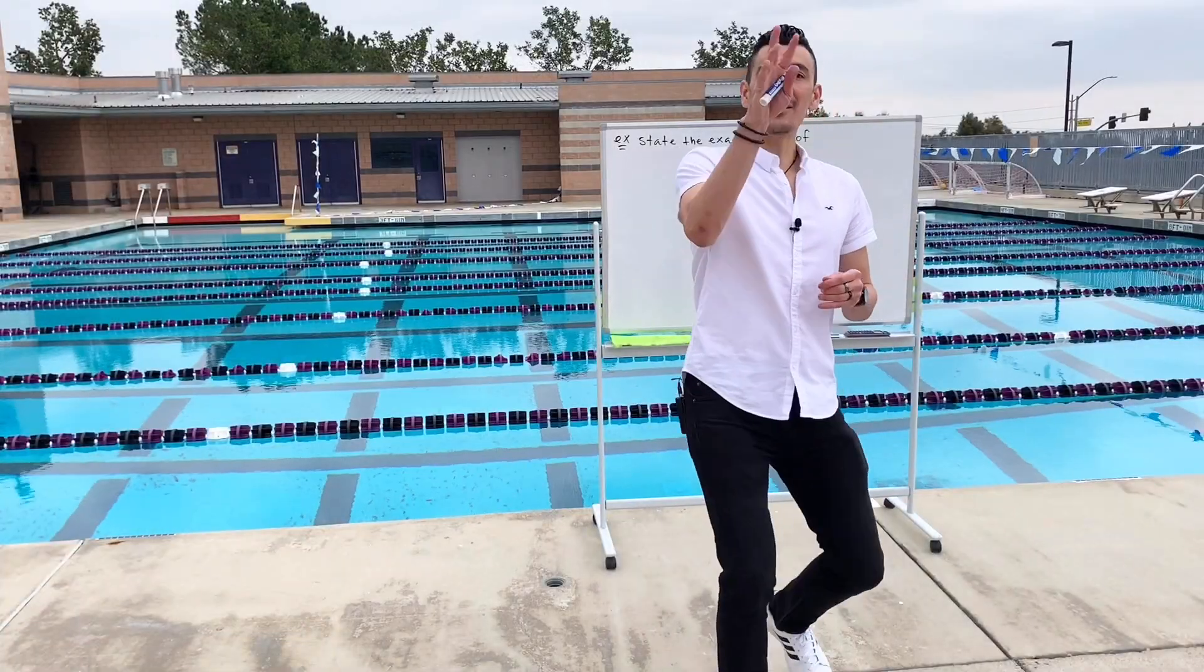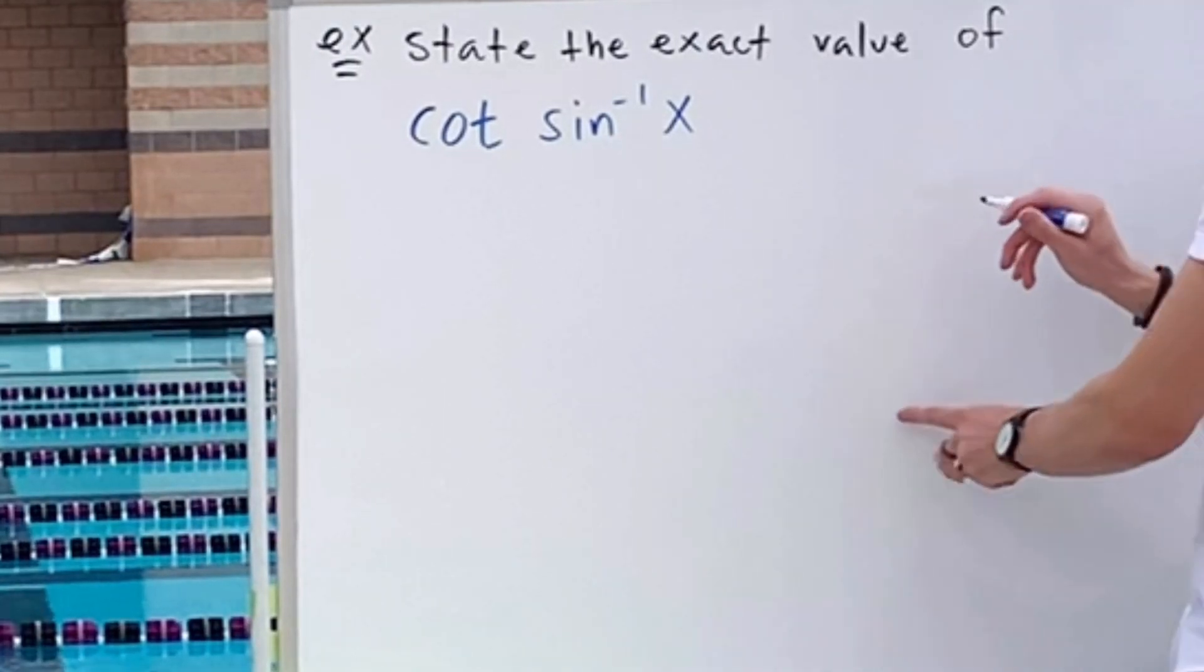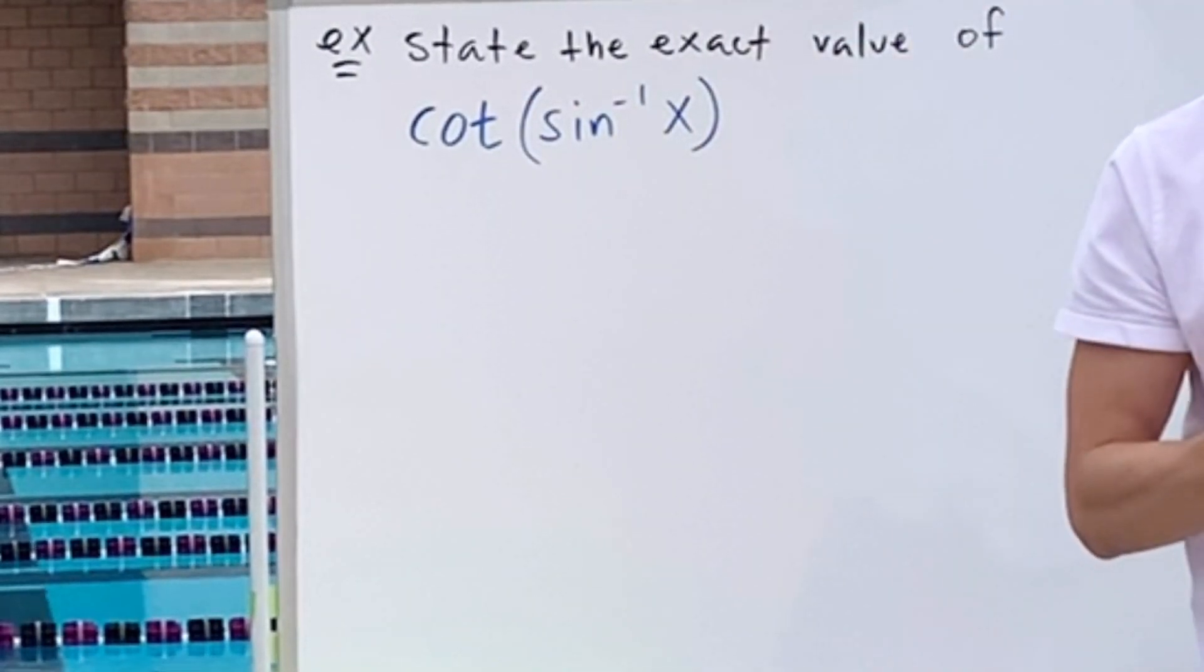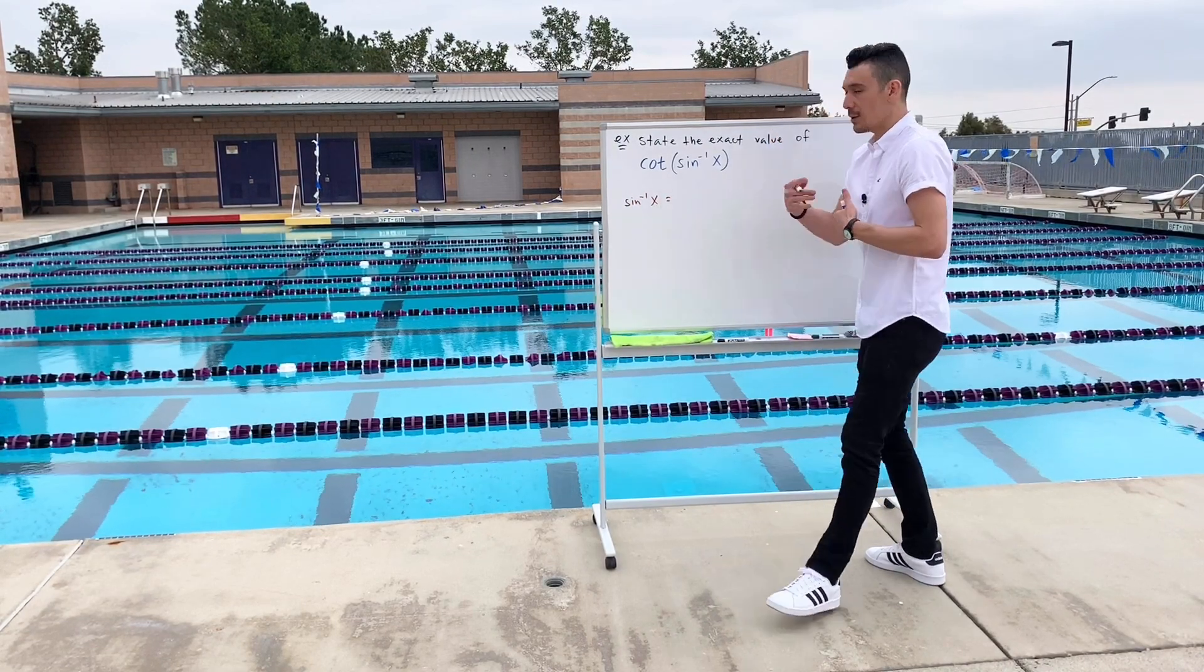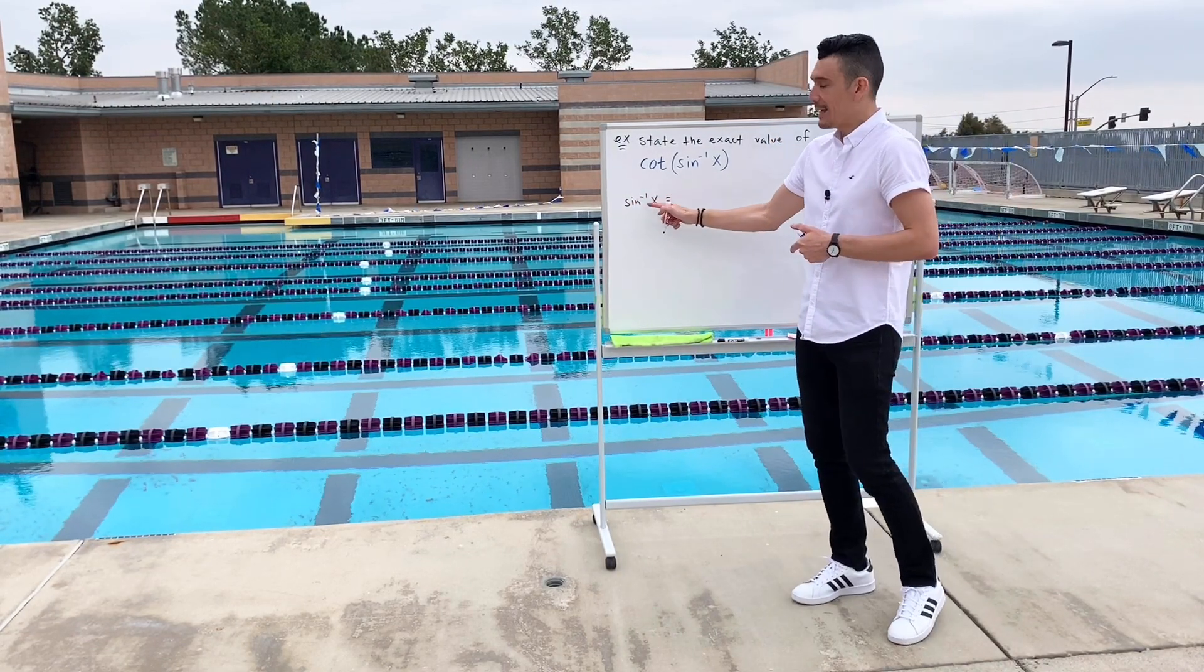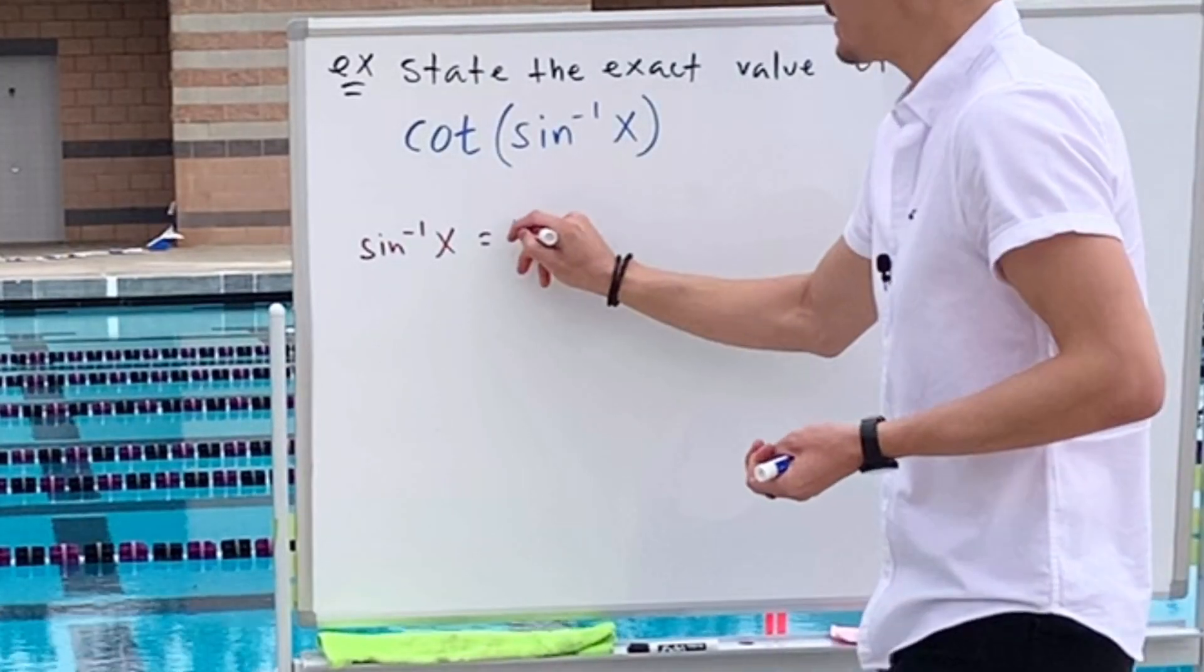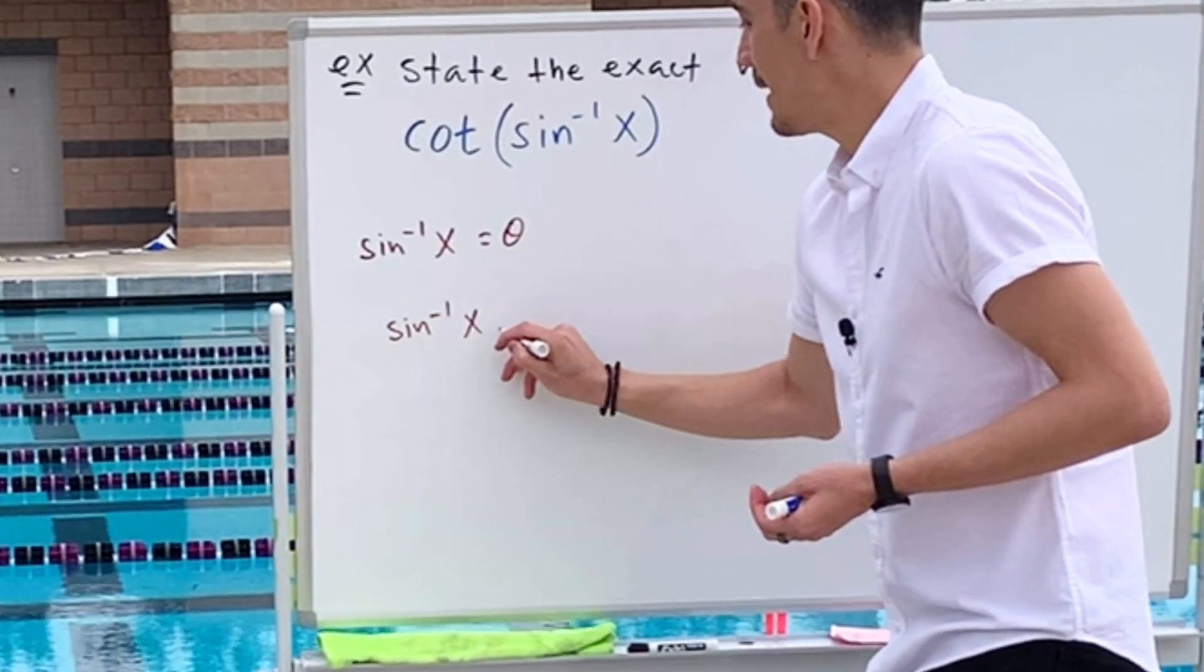Okay, one more and then I'll let you go. Cotangent of sine inverse of x. Now again, if they don't use parentheses, you don't have to, but it's not a bad idea. Sine inverse of x equals. Well, again, recall that the inverse of any trig function is an angle theta. So we have this here. And I'll write it down again.